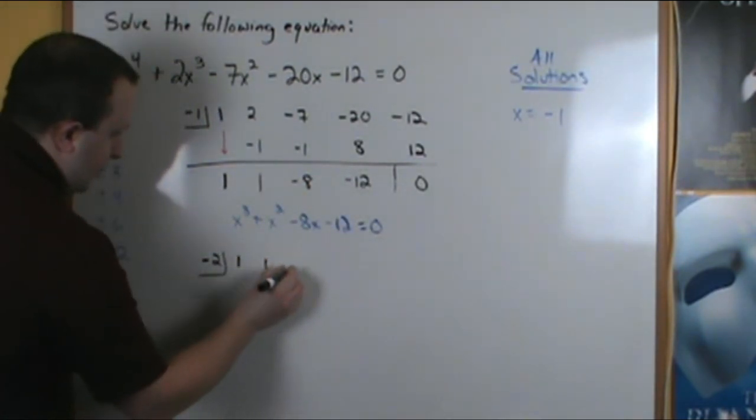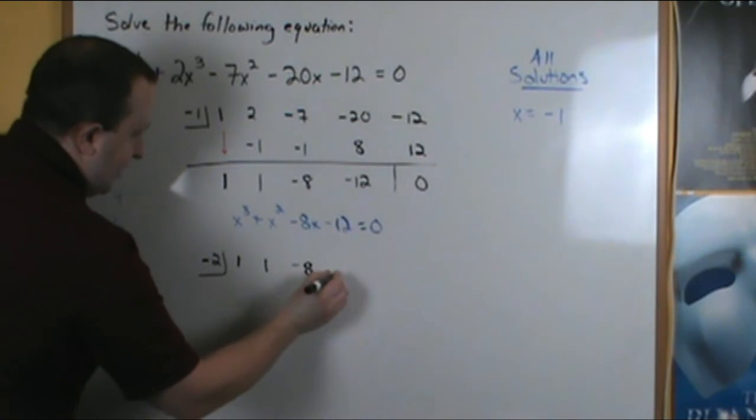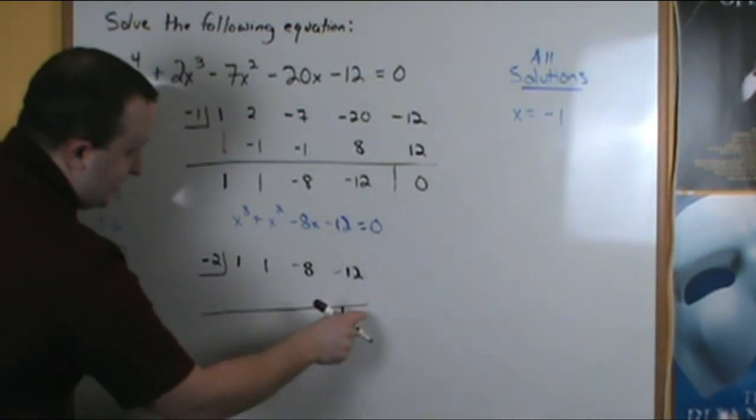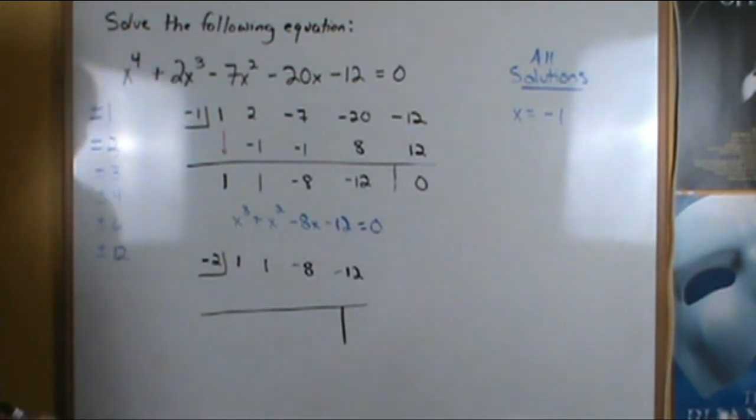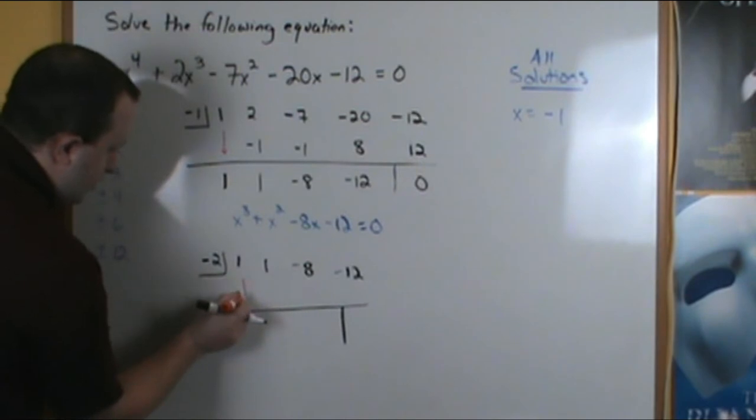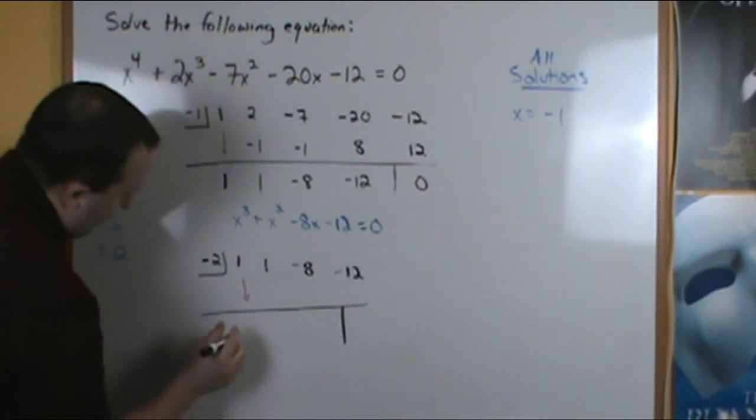So let's use negative 2 and use these coefficients here. We got 1, 1, negative 8, negative 12, and in this spot right here, we want a 0. So let's bring down this 1.